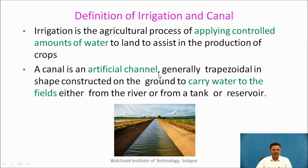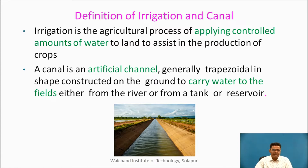Firstly, we will see the definition of irrigation and irrigation canal. Irrigation is the agricultural process of applying controlled amounts of water to land to assist the production of crops. A canal is an artificial channel, generally trapezoidal in shape, constructed on the ground to carry water to the fields either from the river or from a tank or a reservoir. We can see a typical irrigation canal here, transferring water from a dam reservoir.